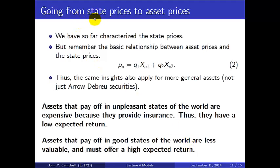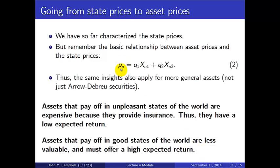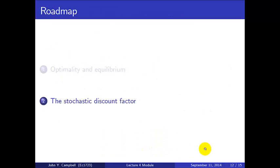In the real world we care about asset prices, not theoretical Arrow-Debreu state prices. But once we have state prices, we can use the basic relation: the price of any asset N is X_{N1}·q1 + X_{N2}·q2, where X_{Ns} is the dollar payoff in state s. Assets that pay off in unpleasant states of the world are expensive because they provide insurance and therefore have a low expected return. Assets that pay off in good states must offer a high expected return. A high price given the payoffs always corresponds to a low expected return going forward.